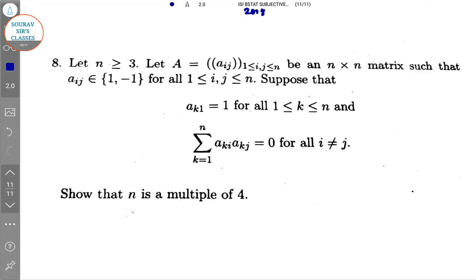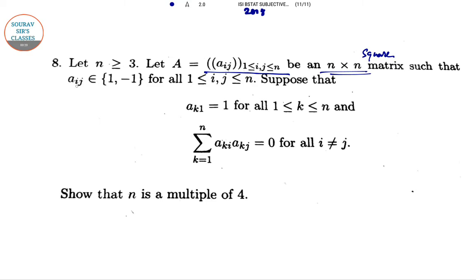So they have given let n greater than equal to 3, let A equal to a_ij for all i,j lies between 1 to n. It is an n into n square matrix such that a_ij is minus 1 to 1 and this one is a discrete form.